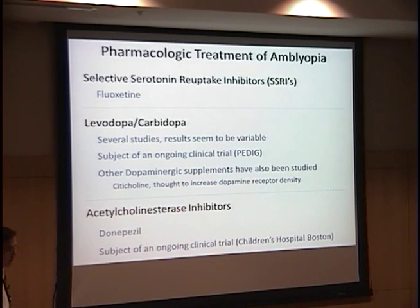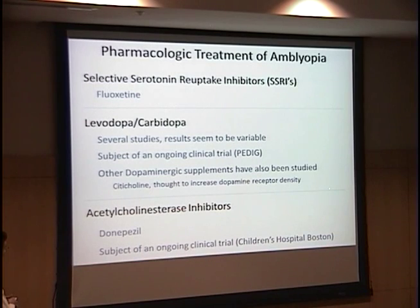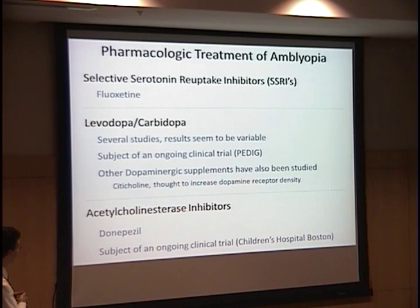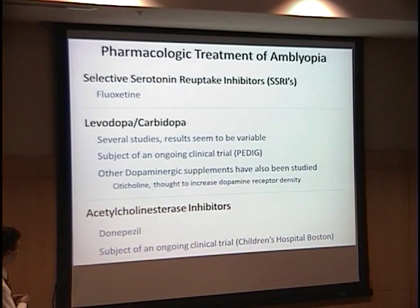I'm going to focus today on what is kind of a holy grail for amblyopia treatment — the ability to just take a pill and help with amblyopia treatment. I'll discuss three different groups of pharmacological treatment for amblyopia and what evidence suggests these drugs might have some effectiveness. There's some support for the use of SSRIs. Levodopa and carbidopa has been studied most extensively in the literature, with somewhat variable results, and it is the subject of an ongoing clinical trial. Other dopaminergic supplements have been studied, specifically acetylcholine, and in small studies have shown favorable results.